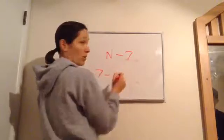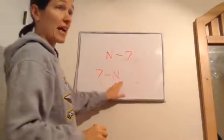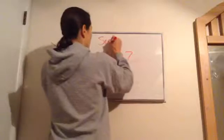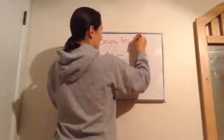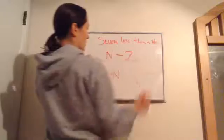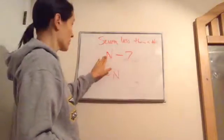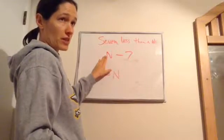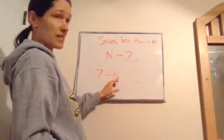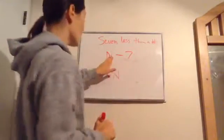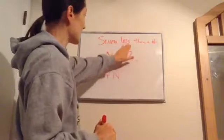You don't want to write 'seven less than number' like that because that makes it a negative number. You want to say: here's a number, and that is seven less than that number. Writing it the wrong way makes it a negative, so make sure you write it as 'seven less than a number.'